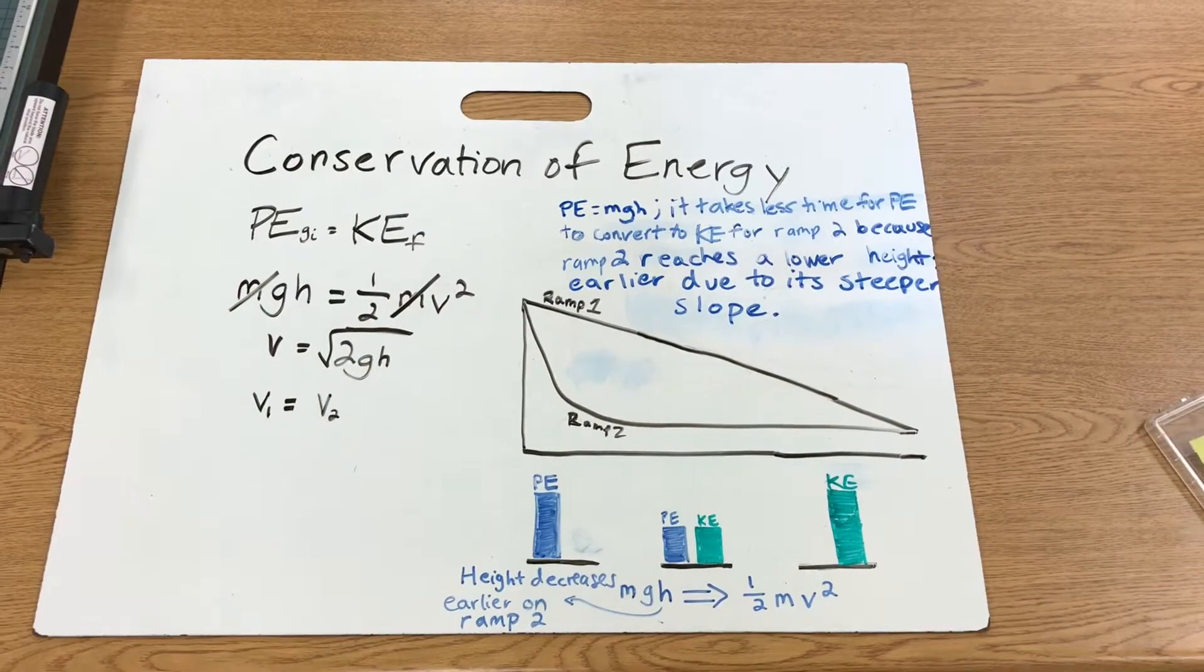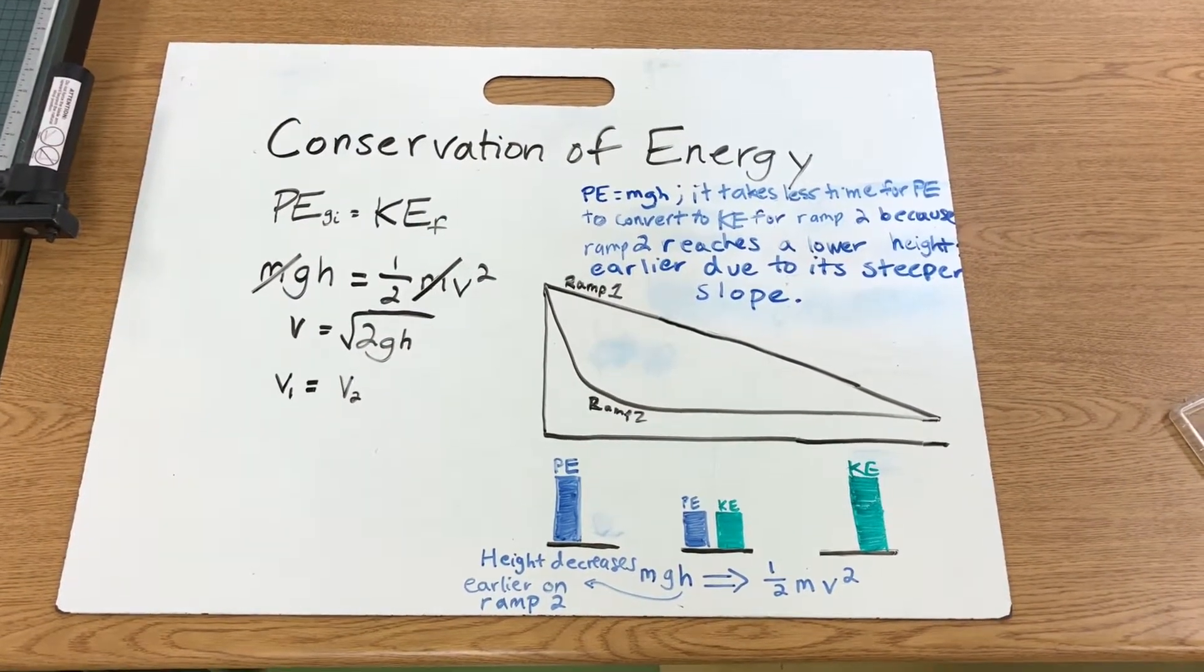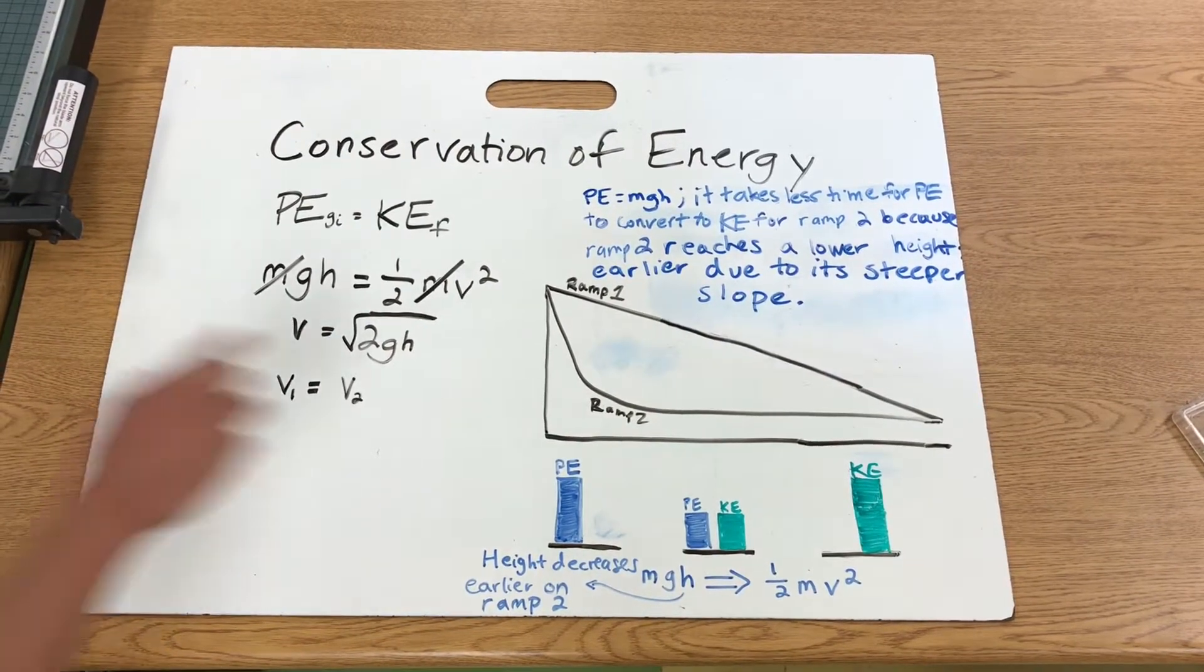So, how does the second ball reach the bottom first if the final velocities are the same? First, the initial slope of ramp 2 is greater than ramp 1 and is steeper as you can see.